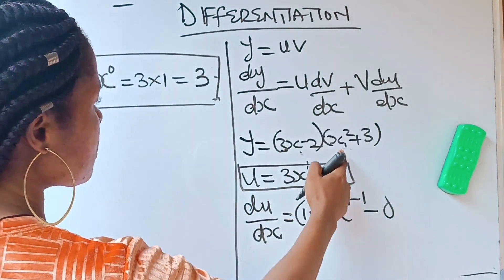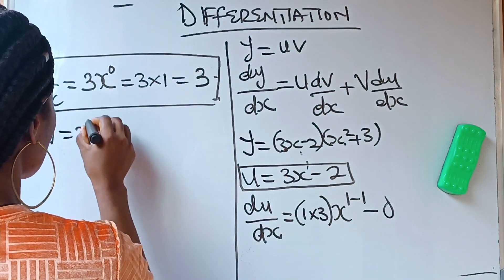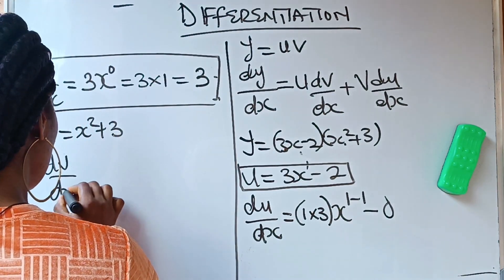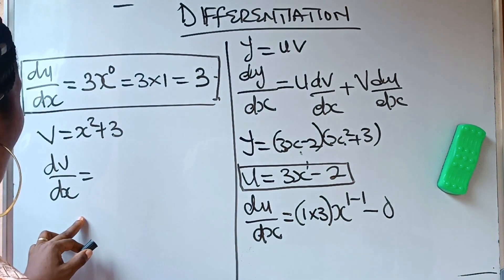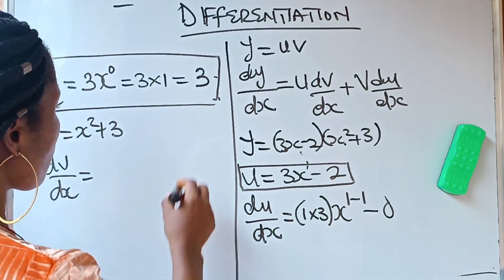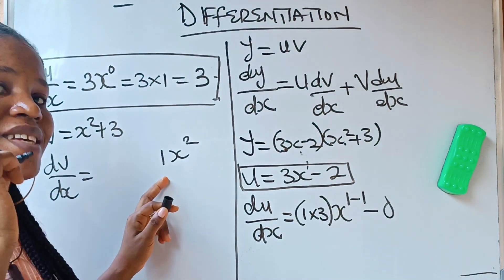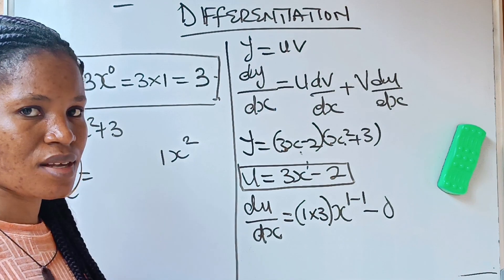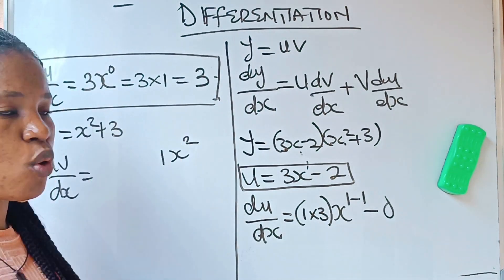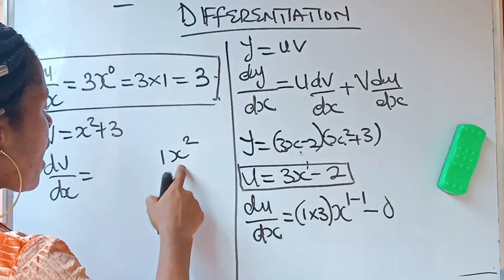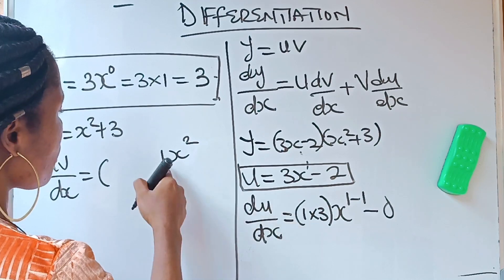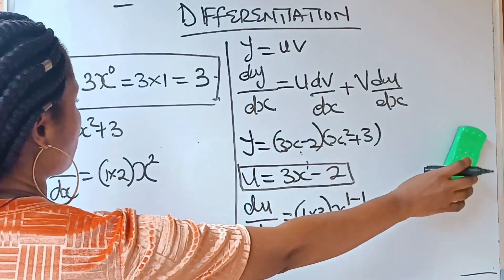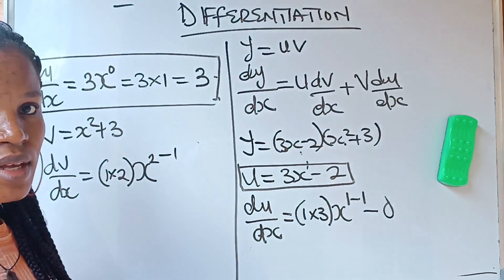We are now going to bring out our v. Our v is x squared plus 3. We are now going to differentiate our v. dv/dx — remember: x squared has an invisible 1 in front. It doesn't make sense to write 1x squared, that's why they normally write x squared. So to differentiate x squared: this 1 times this 2, write x, then subtract 1 from the power.